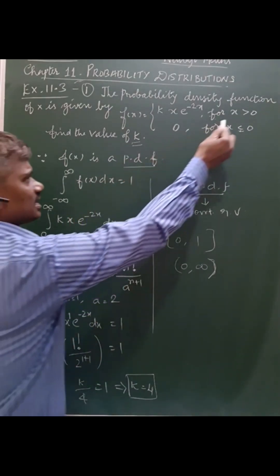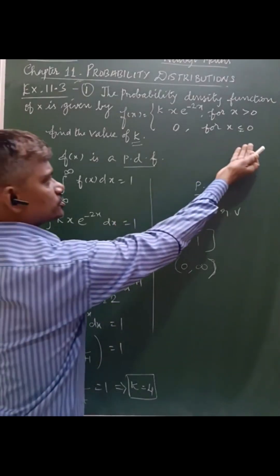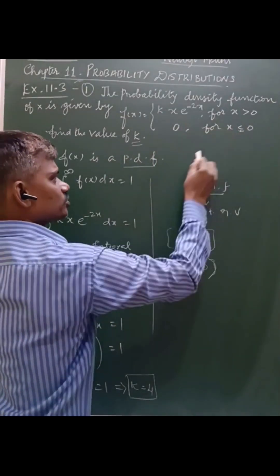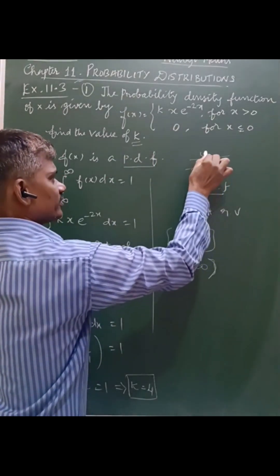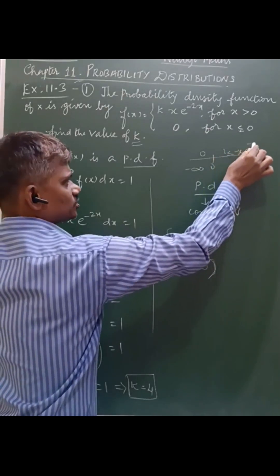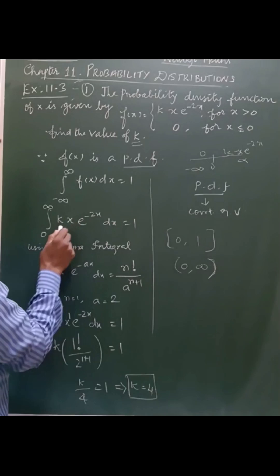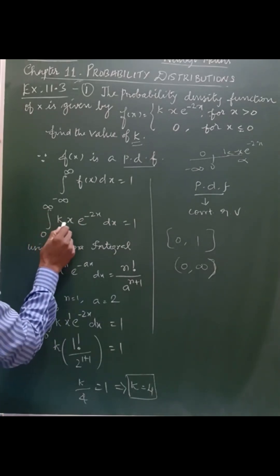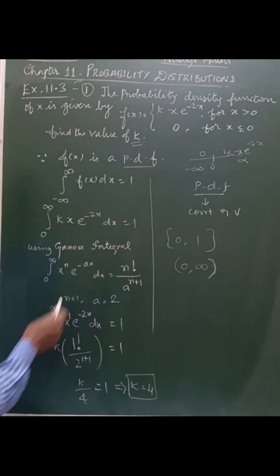In this problem, 0 to infinity is given, and 0 to minus infinity to 0 the function is defined as 0. So we have k x into e power minus 2x. Now we write 0 to infinity, k into x into e power minus 2x dx equal to 1.